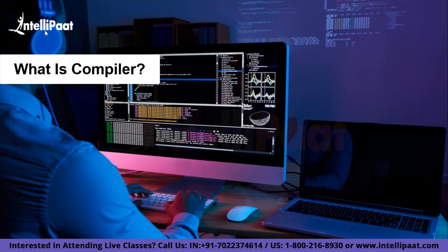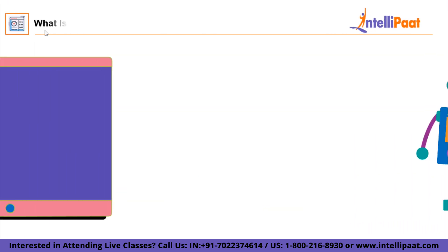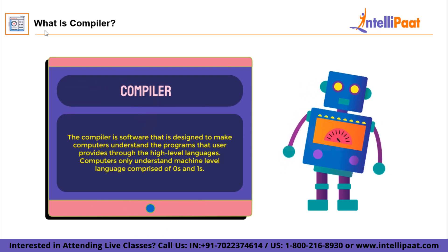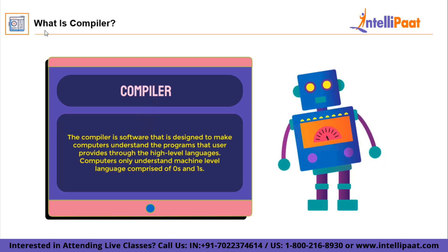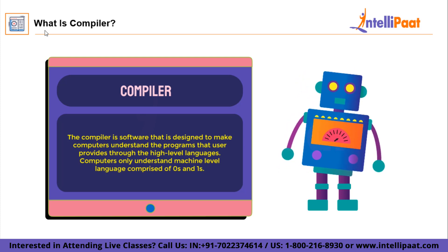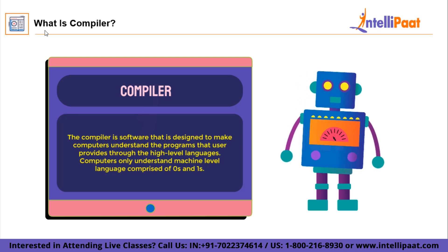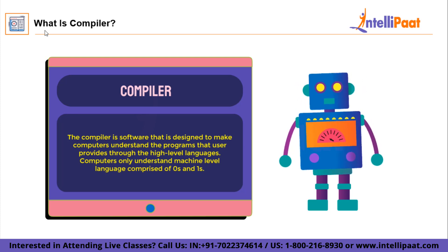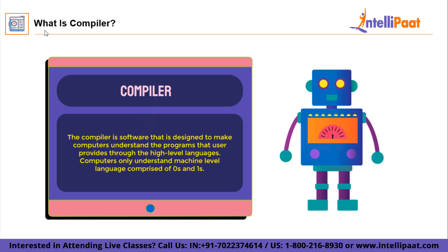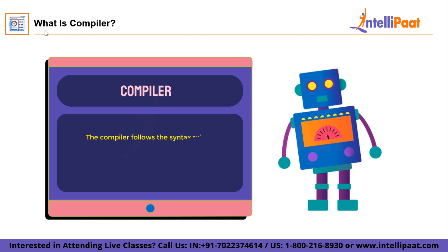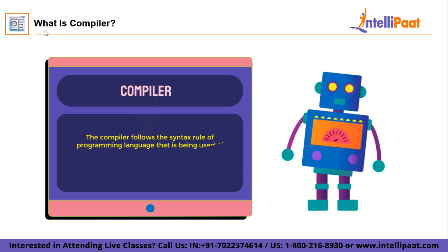First of all, we shall talk about what is a compiler. Basically, both the compiler and interpreters are software that are designed to make computers understand the set of commands or programs that the user is providing through high level languages. Computers only understand the machine level code, or what is commonly known as binary code, comprising of only zeros and ones.